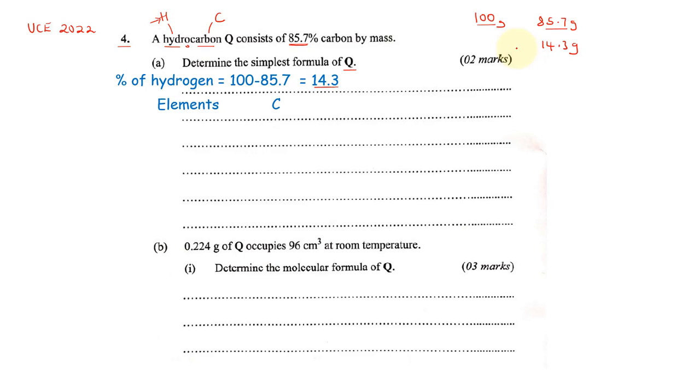We can use that to determine the number of moles. So the elements present, we have carbon and hydrogen. We shall start with carbon and then hydrogen instead of the other way around, because we know when you're writing hydrocarbons, we normally start with carbon and then hydrogen. For example, C3H8. So we have our elements: carbon and hydrogen. We need to find the number of moles.